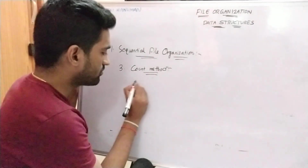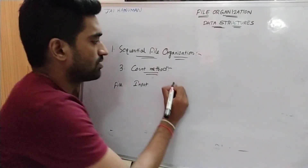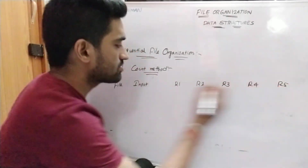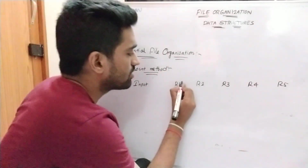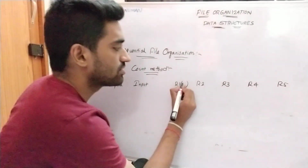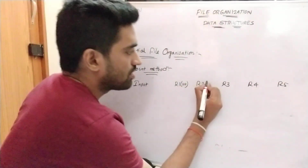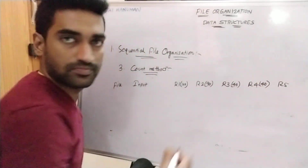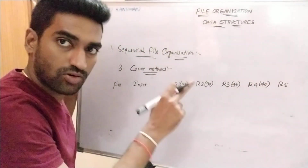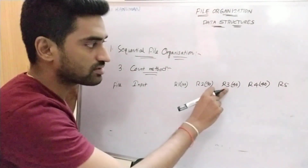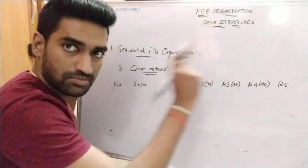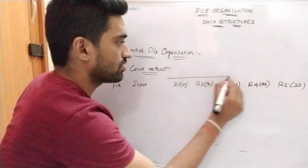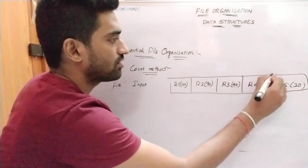Our input file is: r1 record searched 100 times, r2 record 90 times, r3 record 40 times, r4 record 40 times, and r5 is 20 times. Each record maintains one element called counter. This is our file information.